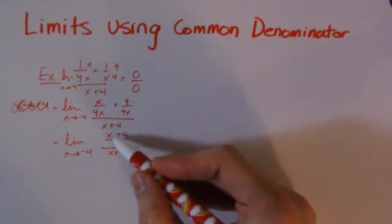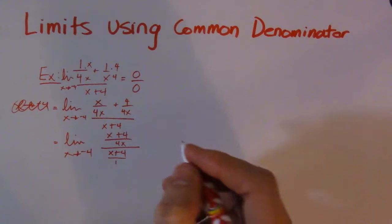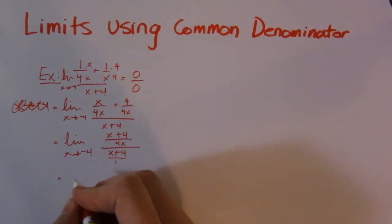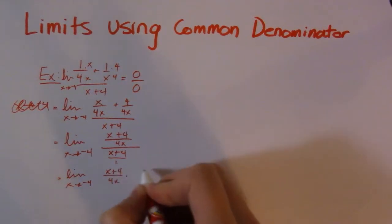So I have a fraction within a fraction. I can think of this as over 1. Then I'm going to change that to multiplication and take the reciprocal of the bottom fraction. So I have (x + 4) all over 4x times, and I'm flipping this over,